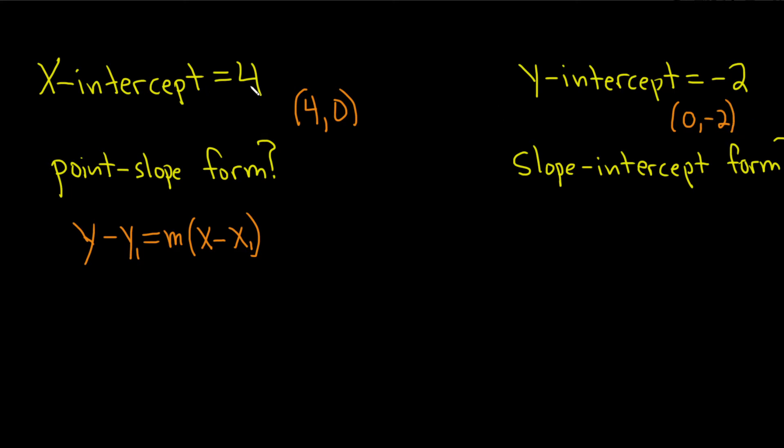So again, x-intercept 4: x is 4, so the other one is 0. Y-intercept negative 2 means y is negative 2, so the other one is 0.